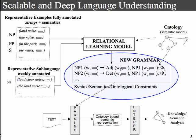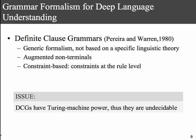Starting with the grammar, the formalism relies on Definite Clause Grammar, developed by Pereira and Warren in 1980. It's a generic formalism not tied to any linguistic theory — you can see it as a computational formalism. You can augment non-terminals, which is important because we want to model in these non-terminals the semantic representation. It also has constraints at the grammar rule level. The problem with DCG is that they have Turing machine power and are undecidable, so if you want to learn them, this is a problem.